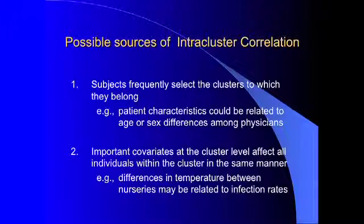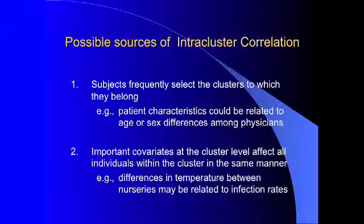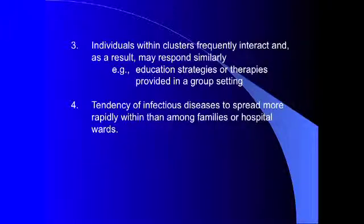The reasons for intra-cluster correlation are various. Subjects could select the clusters to which they belong — for example, female patients may select female doctors, or non-smoking patients may select non-smoking physicians. It could also be external covariates at the cluster level affecting all individuals in the same manner, such as differences in temperature between nurseries affecting infection rates. There is also internally generated clustering where individuals within clusters interact and respond similarly, as well as education strategies or therapies provided in a group setting. Finally, infectious diseases tend to spread more naturally within families or hospitals. Whatever the reason, intra-cluster correlation must be accounted for in both design and analysis.